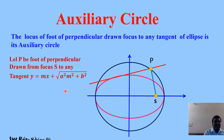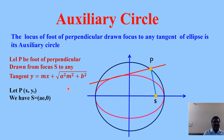Let P = (x₁, y₁) be any point on the locus — that is, the foot of perpendicular drawn from focus S = (ae, 0) to the tangent. The two conditions are: first, point P lies on the tangent; second, the product of slopes of SP and the tangent equals −1.